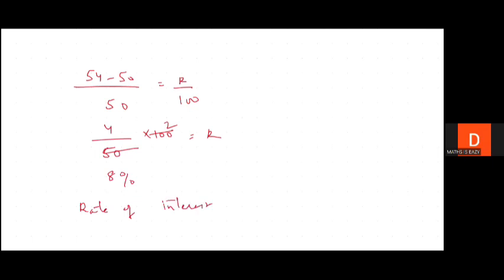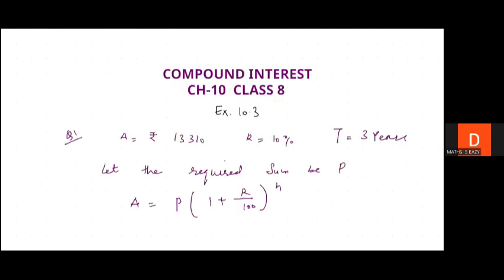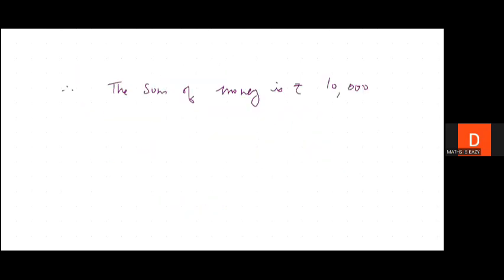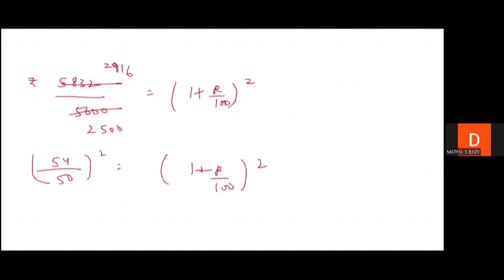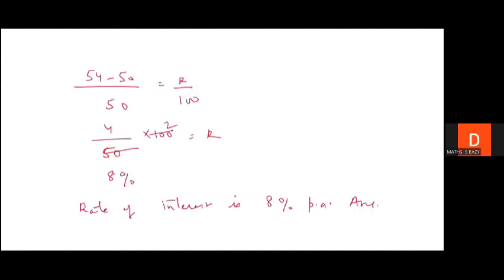The rate of interest is 8 percent per annum. I hope the whole question is clear. If any type of doubt is there, feel free to ask by commenting in the comment box. If you like my videos or find them helpful, subscribe to my channel, hit the like button, and share the videos as much as possible. In my upcoming videos I'll be solving more questions on compound interest. Thank you so much and stay tuned.